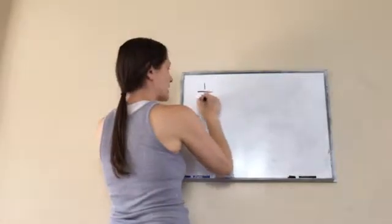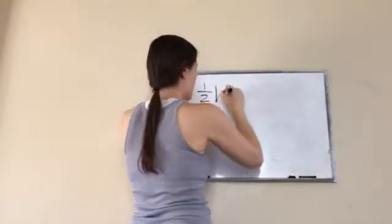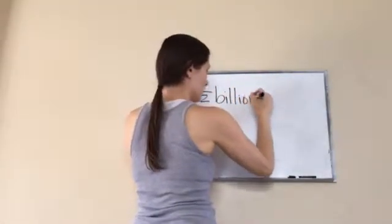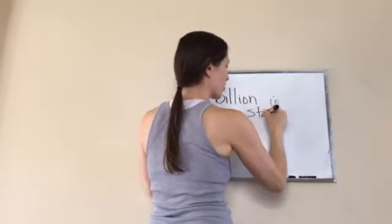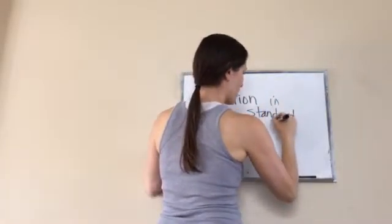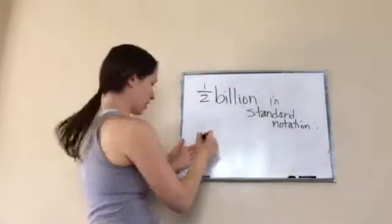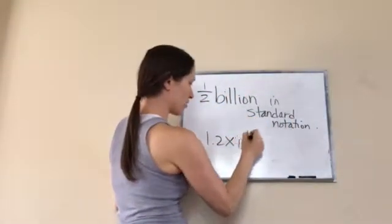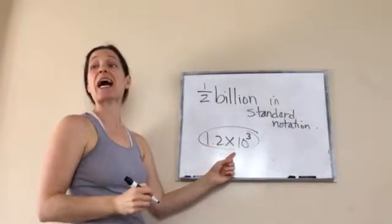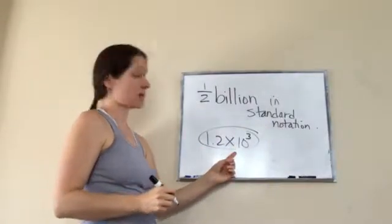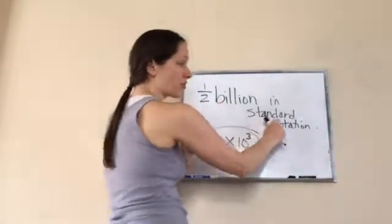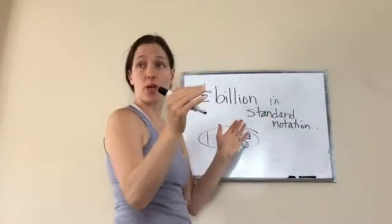Here's what they're asking me to do. They want me to write a half billion in standard notation. Now, what you just saw a while ago when it said 1.2 times 10 to the third power, this is called scientific notation.